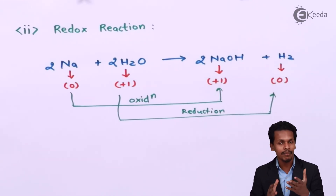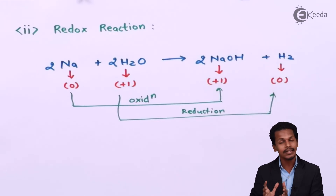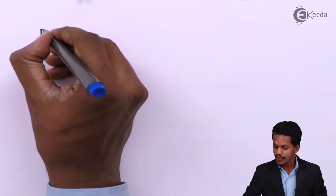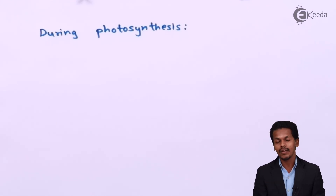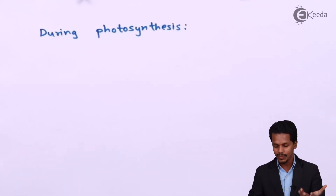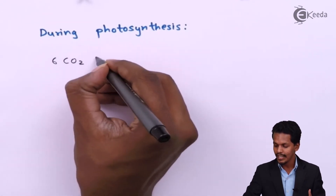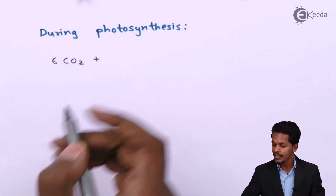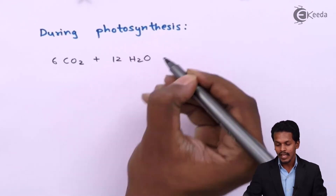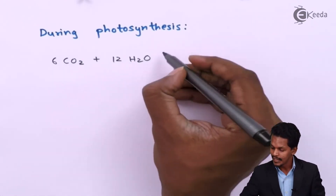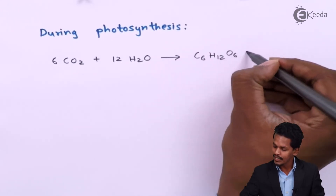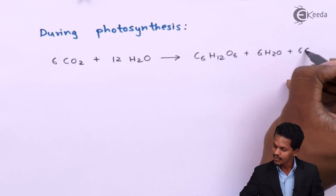Water plays a very important role in redox reactions. During photosynthesis also, a redox reaction takes place. The CO2 taken in by plants is used to make food like glucose, which is a good source of energy. Specifically, 6 moles of CO2 reacts with 12 moles of H2O to produce C6H12O6 (glucose or fructose) along with 6 moles of H2O and 6 moles of O2.